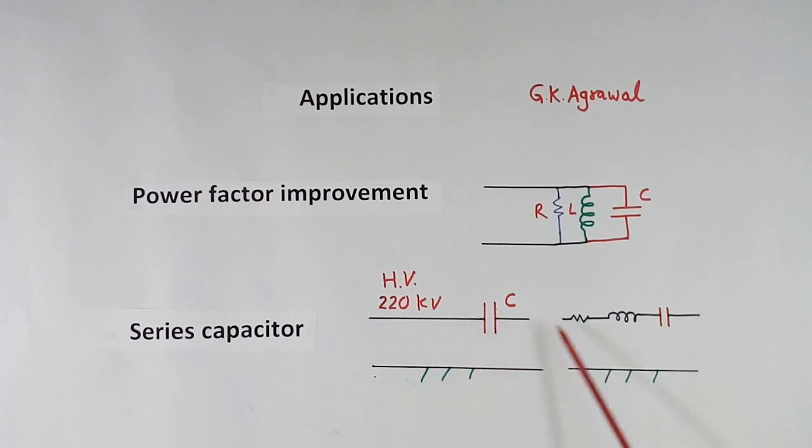Now this wire will have resistance and inductance. This resistance and inductance is the value of R and L of this wire, is not connected extra. Because of this L, transmission capacity of this transmission line comes down. To improve that, we connect a capacitor in series. This capacitor will cancel out this inductance, and power transmission capacity of this transmission line will improve.